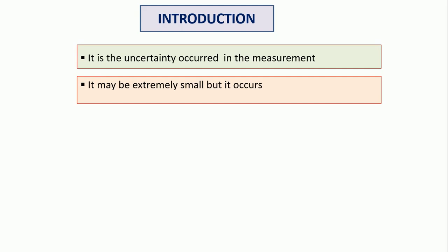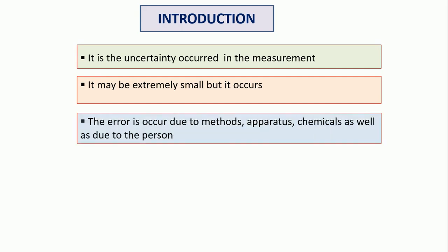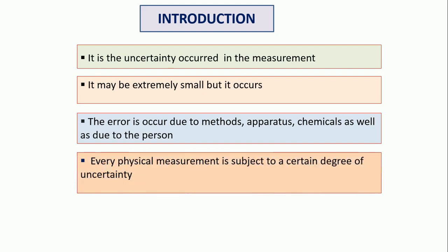It is not due to that person alone — it has a number of reasons, but it is small and it occurs, so that is the error, or it is known as uncertainty. The error occurs due to the methods, due to the apparatus, chemicals, as well as due to the person who is going to do the experiment. Every physical measurement is subject to a certain degree of uncertainty — whether we are weighing a substance on a balance, doing volumetric analysis, gravimetry, or any physical measurement, some degree of uncertainty is observed, and this is called errors.